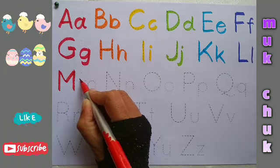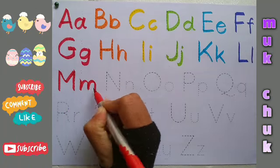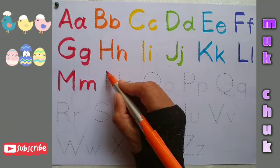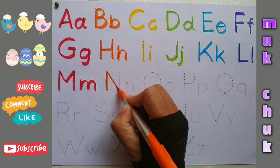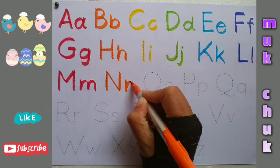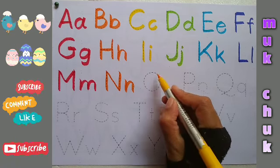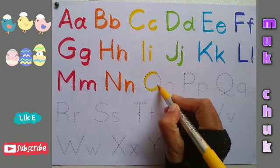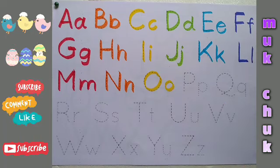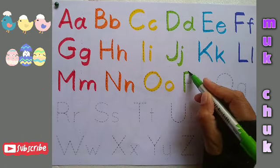M, capital M, small m. M for monkey. N, capital N, small n. N for nest. O, capital O, small o. O for orange.